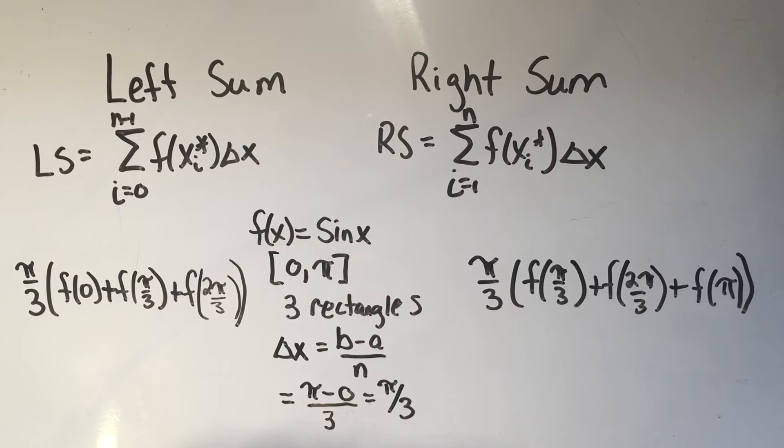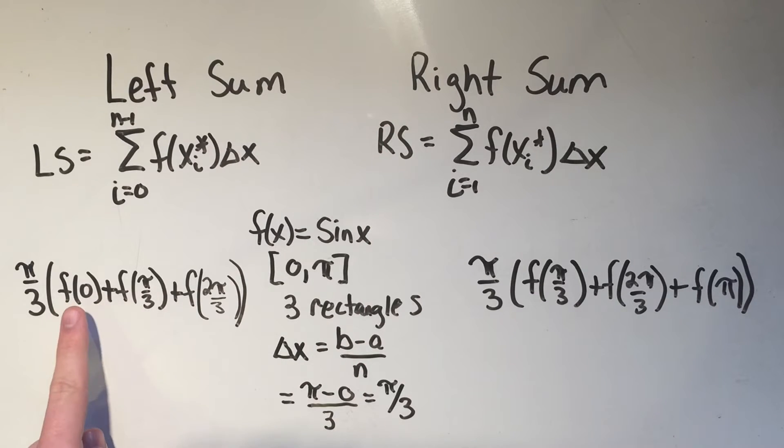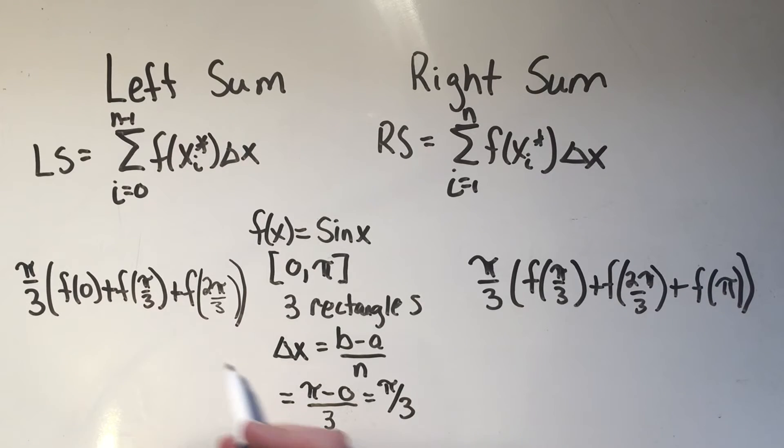So take a look at this. These two sums, the left and the right, are exactly the same, except the left sum includes the left endpoint, which is zero, and the right sum includes the right endpoint, which is pi. And now this is just a matter of punching it into the calculator or evaluating.